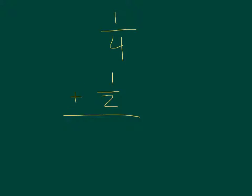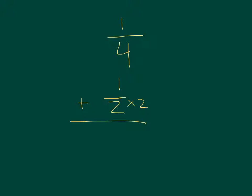The first step is to find the lowest common denominator. 2 times 2 is 4, so that's our common denominator. But what you do to the bottom, you have to do to the top. So 1 times 2 is 2.